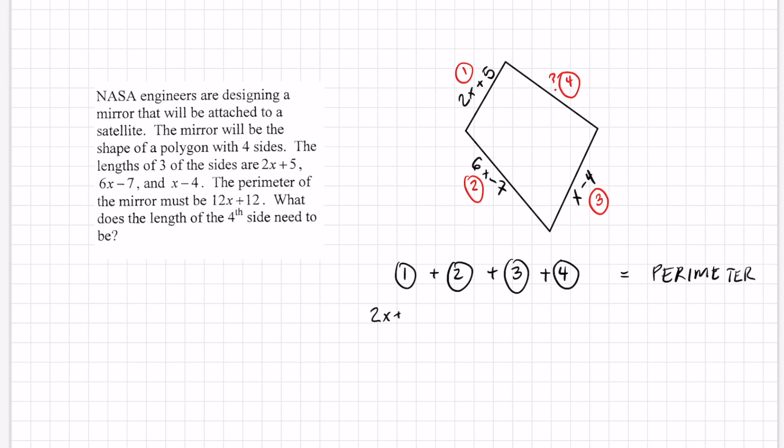My first side is 2x + 5. Second side is 6x - 7. My third side is x - 4. And we don't have the fourth one. Let's call that s once again. We are given the perimeter and it says the perimeter here is 12x + 12. Combine like terms and solve for s. Let's do that. 2x + 6x + x is 9x and positive 5, negative 7, and negative 4 is just negative 6 plus s equals my given perimeter 12x + 12.